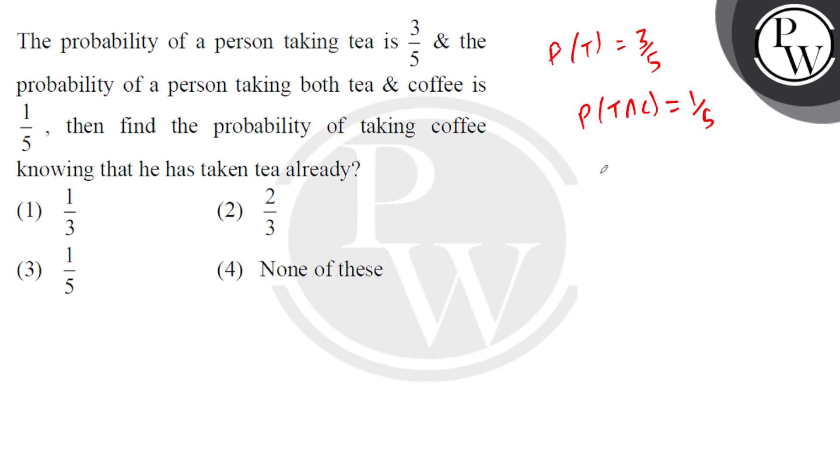We need to find the probability of taking coffee knowing that he has already taken tea, so P of C given T. Now the formula is P of C intersection T divided by P of T - the conditional probability formula.